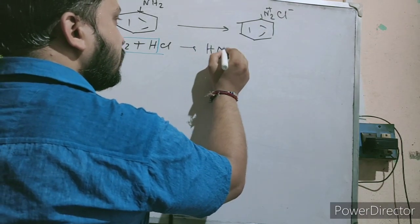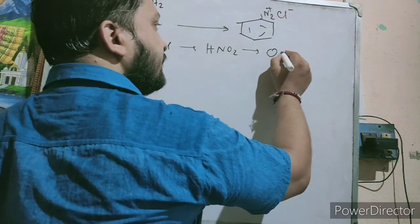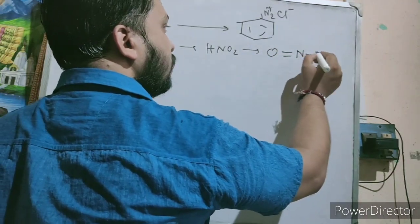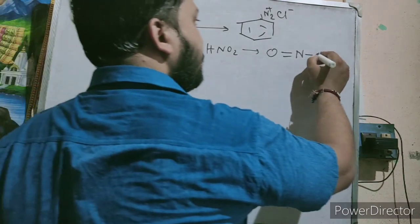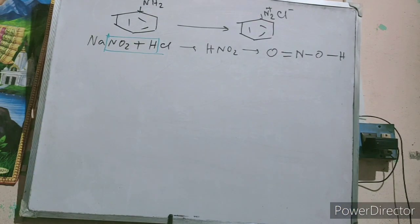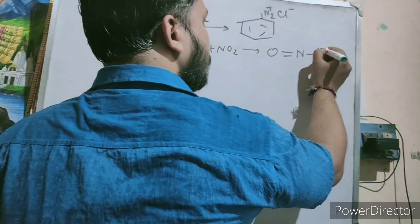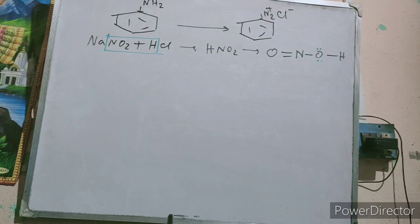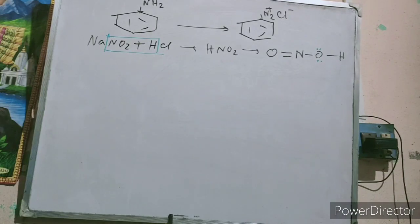Now look — this is HNO2. You can write HNO2 in this structural form. So O has a lone pair. This is HNO2.